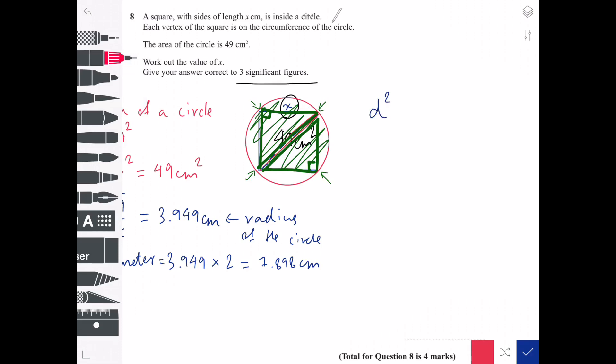It will be diameter² equals x² plus x². So the diameter which is the diagonal length is 7.898². That equals 62.378 which equals x² plus x².